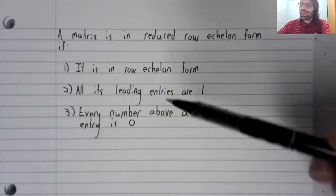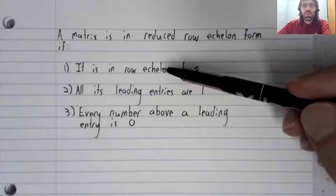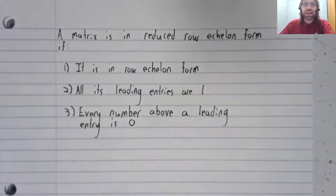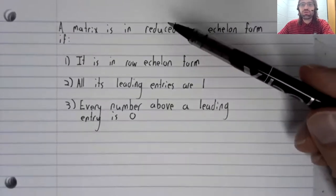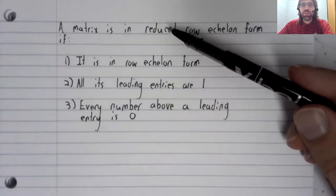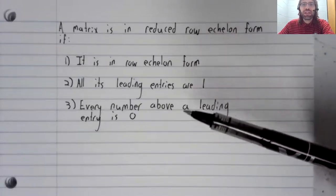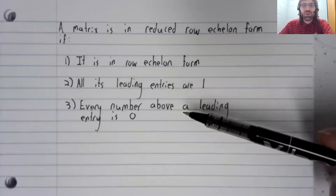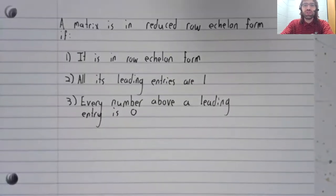To be in row echelon form, every number below a leading entry has to be zero. To be in reduced row echelon form, we still have that requirement. And now we have this additional requirement that the entries above the leading entries be zero.